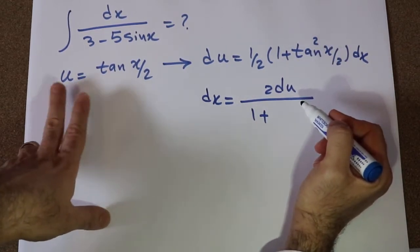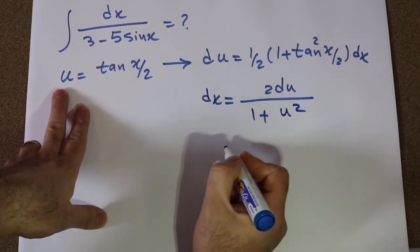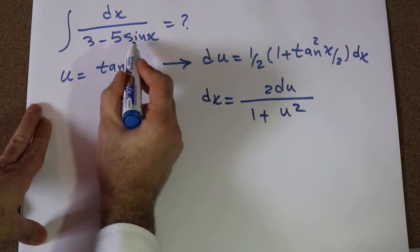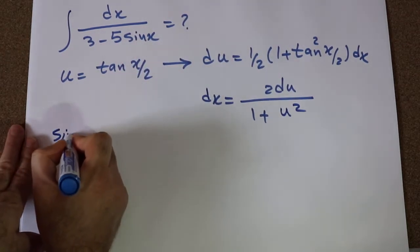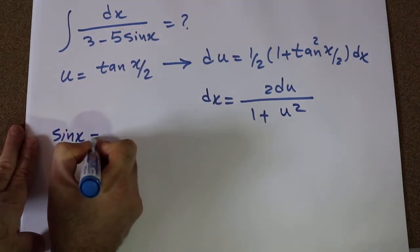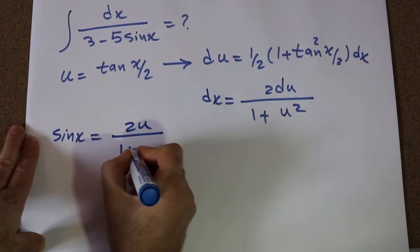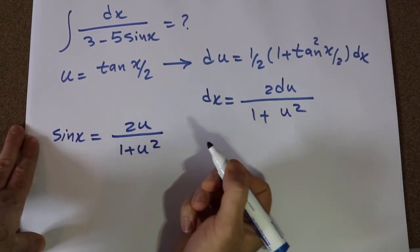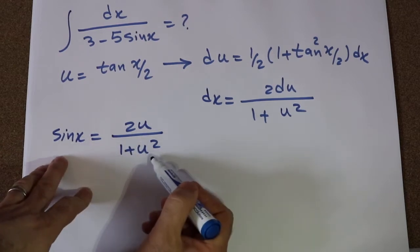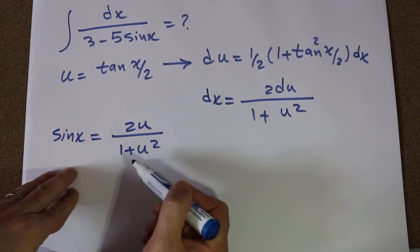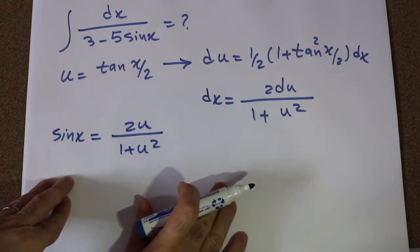Since tangent x divided by 2 is u, tangent squared will be equal to u². Also, we have sine x in the integral. Using trigonometry you can show that sine x is equal to 2u divided by 1 plus u². If it's not clear how to obtain this relationship, write for me in the comment section and I will explain how to get this.